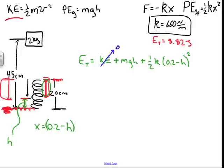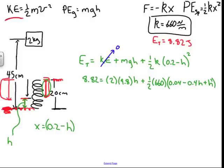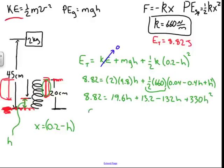So this is 0, and I can fill in my numbers and say 8.82, that's joules, is equal to M is 2 kilograms, 9.8 meters per second squared. H is my variable that I'm trying to solve, plus 1/2, 660 N per meter, times, and then if I expand that out, it's going to be 0.04 minus 0.4H plus H squared. I'll do one more step of simplification before I have to turn to the quadratic formula. So this is 19.6H plus this quantity is 330, but then multiplied by 0.04, 13.2 minus 132H, that's the middle term of what's in parentheses over here, plus 330H squared.